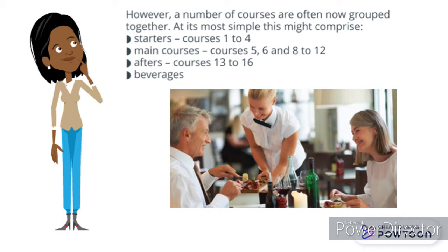A number of courses are often now grouped together. At its most simple, this comprises starters (courses 1–4), main courses (courses 5, 6, and 8–12), afters (courses 13–16), and lastly beverages.